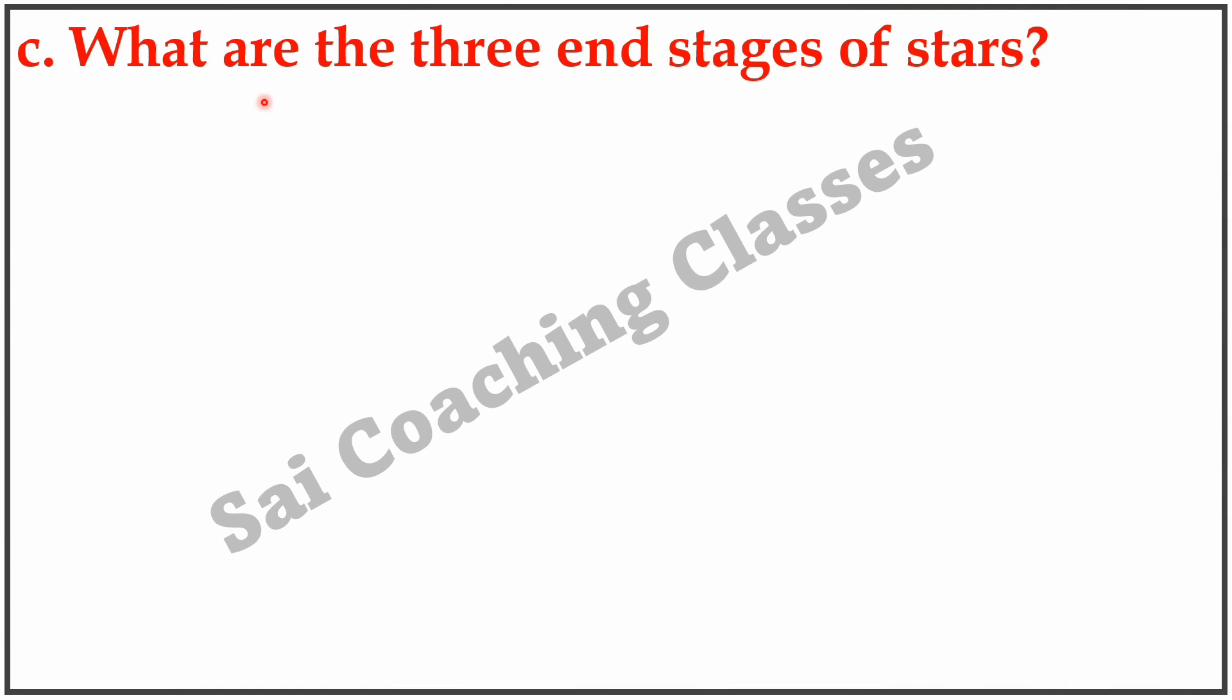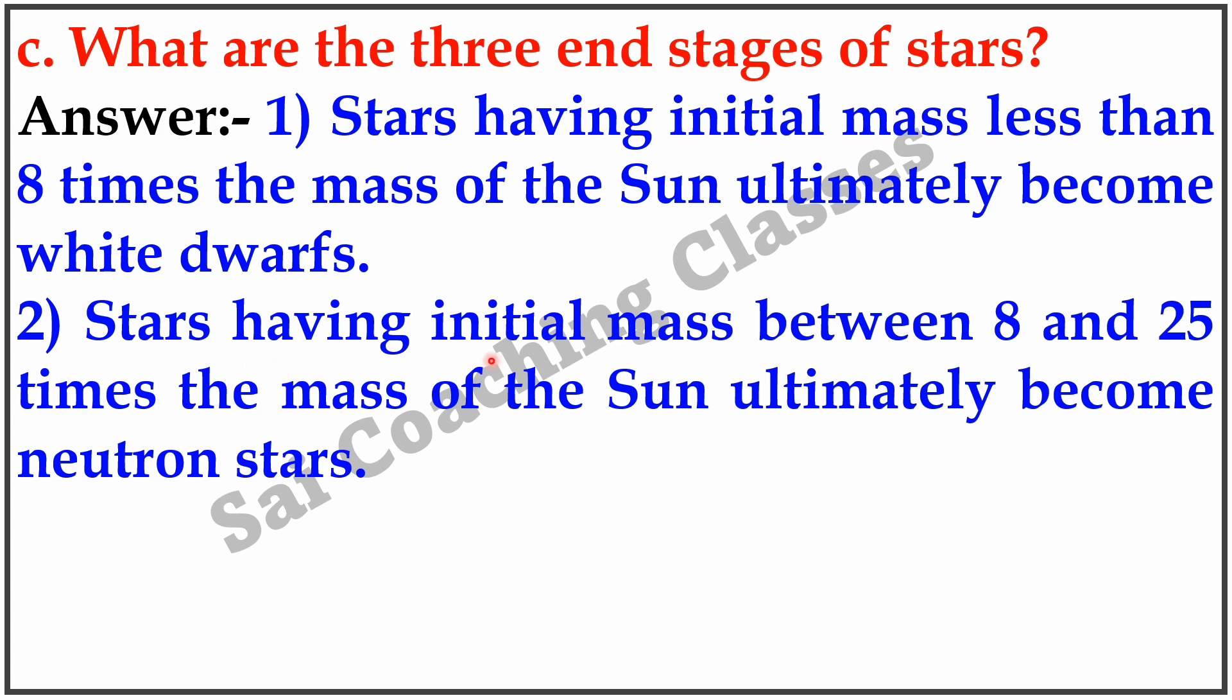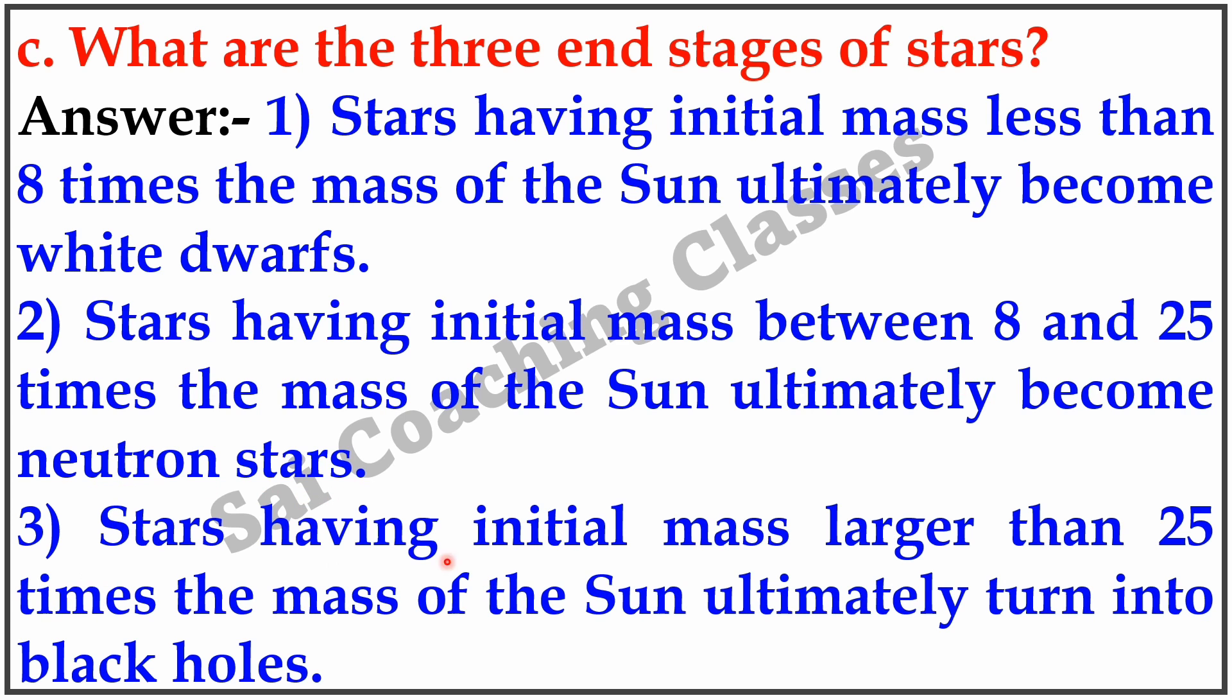C. What are the three end stages of stars? Answer: Stars having initial mass less than 8 times the mass of the sun ultimately become white dwarfs. Stars having initial mass between 8 to 25 times the mass of the sun ultimately become neutron stars. Stars having initial mass larger than 25 times the mass of the sun ultimately turn into black holes.